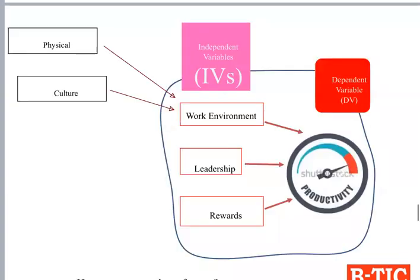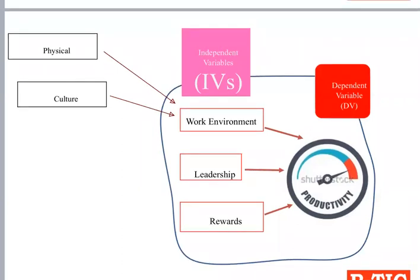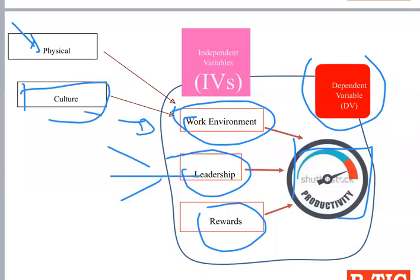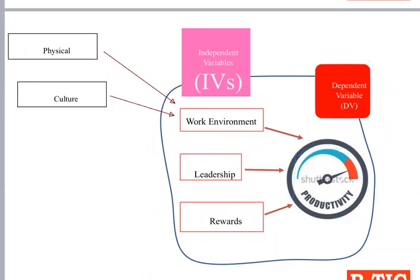Here is a practical example. If your problem is productivity, and the influential IVs are work environment, leadership, and rewards, you can't measure work environment directly. Indicators might include physical conditions: number of air conditioning units, ventilation quality, daily temperature. Culture of the work environment can be an indicator. Leadership and rewards can each be measured using multiple indicators. You must develop indicators for each IV and for the DV.